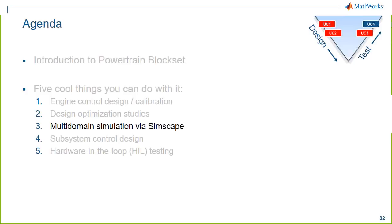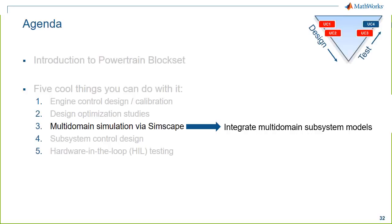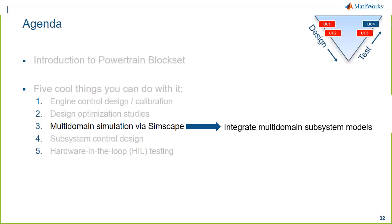Cool thing number three: Simscape integration to incorporate multi-domain subsystem models into Powertrain Blockset. Powertrain Blockset focuses heavily on engine modeling and engine controls, while Simscape is a broader multi-domain tool. Powertrain Blockset users typically do analysis work on existing hardware using empirical models, while Simscape users often do design work with first-principles, equation-based, acausal modeling. The two tools can be used together in many ways.